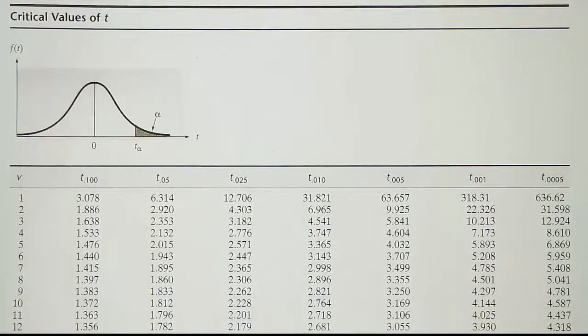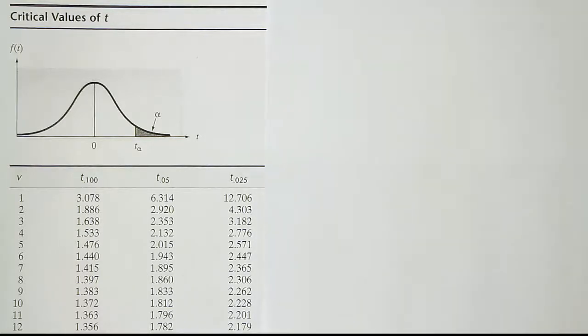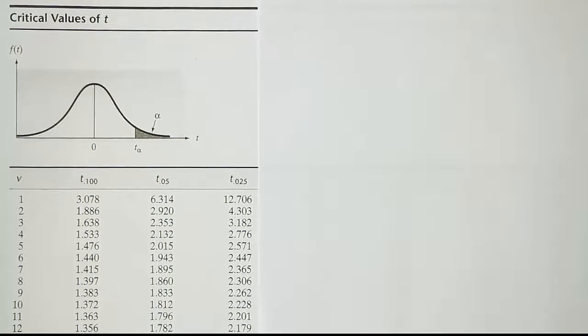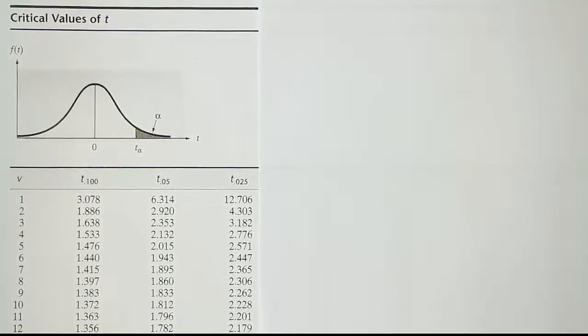We're looking for the critical z value that corresponds to a 95% confidence level. Alpha is 5%. On this table we need to look up half of that number, so instead of 5% we'll be looking up 2.5%. Let's isolate that column first. That's isolated. Next we're going to move the table down to the last row where we'll find the z values.